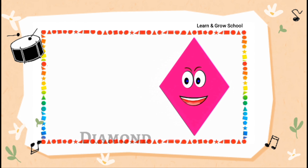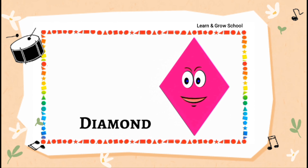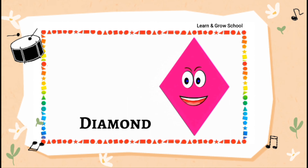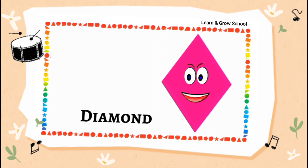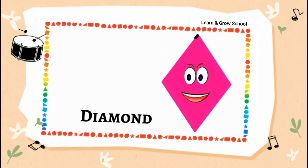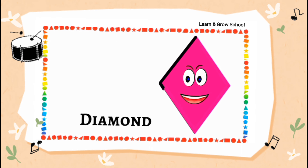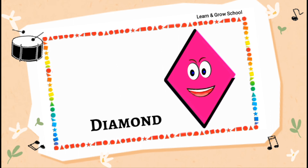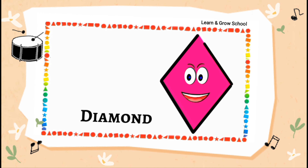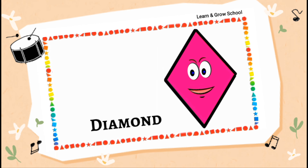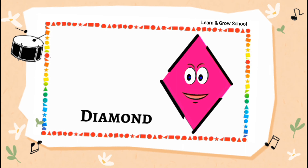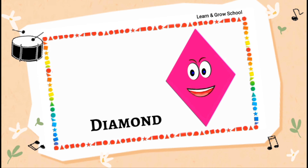Hi, I am a diamond. I have four sides: one, two, three and four. I am made up of four sides and four corners.